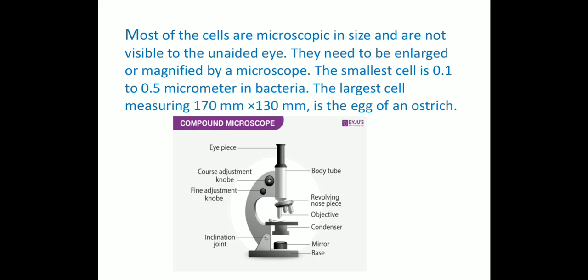The largest cell measures about 130 to 170 millimeters — that is the egg of an ostrich. There is an activity in the NCERT book, activity 8.2: boil a hen's egg, remove the shell, and observe. The white material covering the yellow part is called albumin, which solidifies while boiling. The yellow part is the yolk, which is part of a single cell, and you can observe this single cell without any magnifying device.